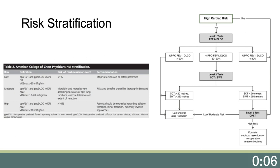Otherwise, they should undergo formal CPET. Patients with values less than 30% go straight to CPET. Patients can then be classified as low, moderate, and high risk, helping guide the discussion between surgeon and patient. These recommendations are limited to lobectomy or greater resections performed by thoracotomy and don't specifically address minimally invasive approaches or sub-lobar resections.